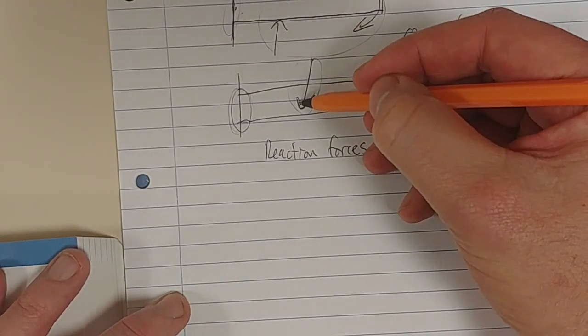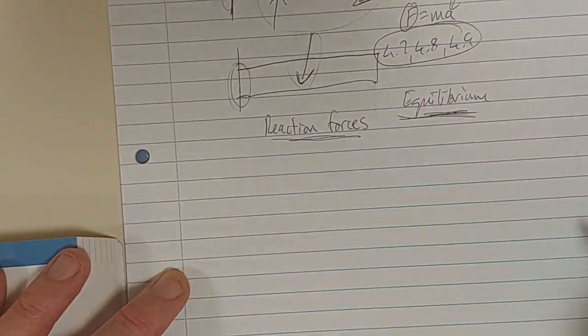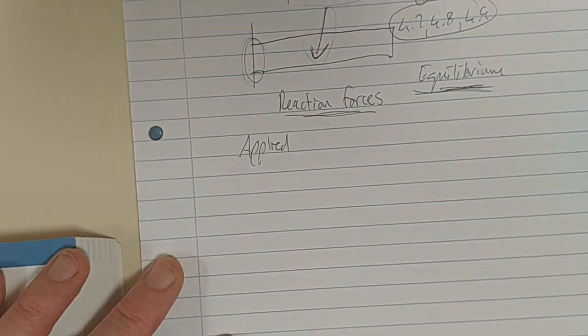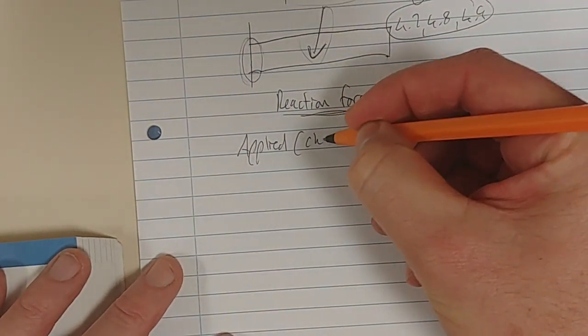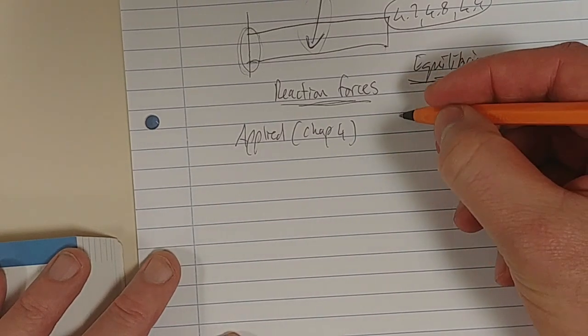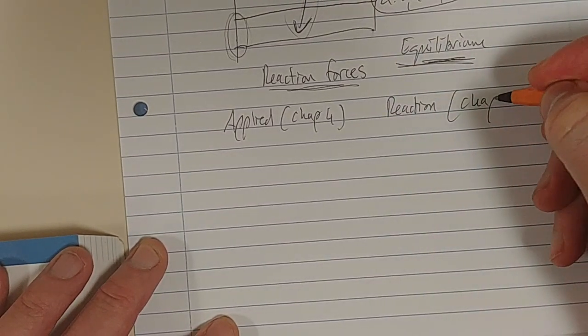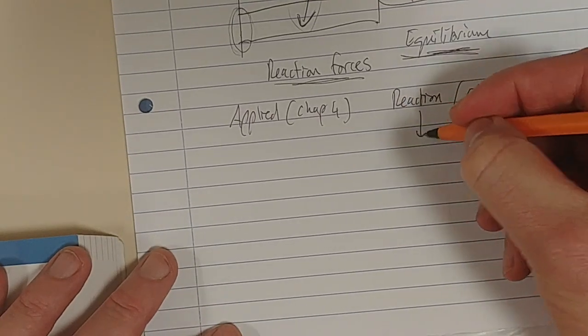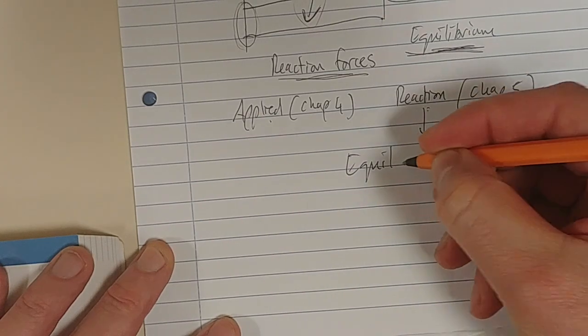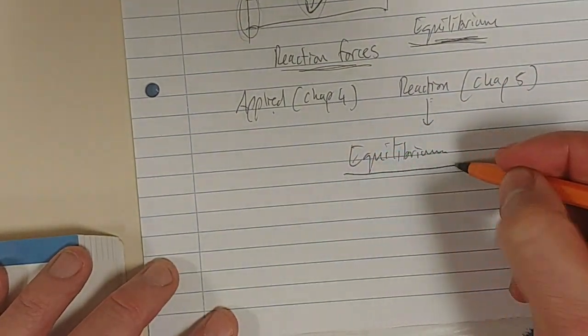You have an applied force, but in order for the beam to remain in equilibrium, you need some reaction forces. So you've got applied forces, that's really Chapter 4. And then we've got now reaction forces, that's really Chapter 5, where applied and reaction gives us equilibrium. I hope that's helping.